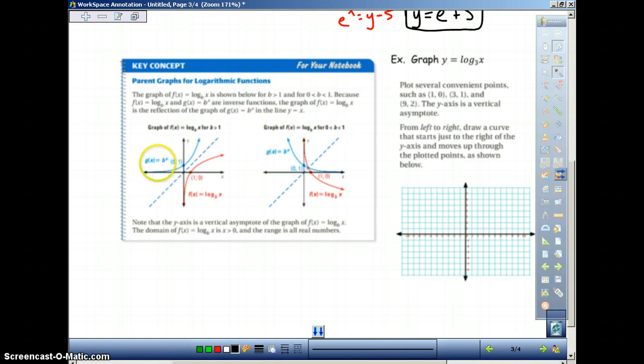So here you can see, here's our b to the x graph. We've graphed these earlier in this chapter. This is what the complete inverse of that will look like. Notice it basically is a reflection over this dotted line right here.